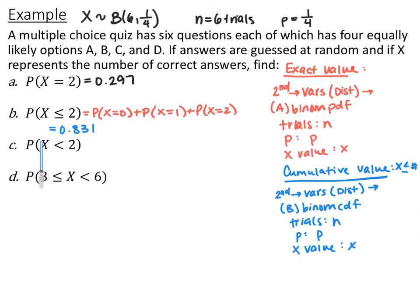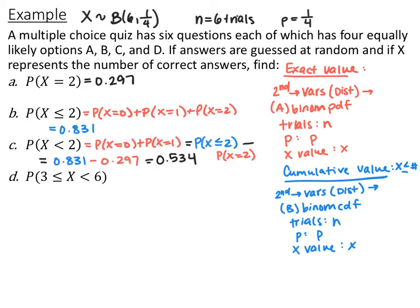If you have P(X < 2), you can't use the cumulative value directly because you don't want to include 2. You can either compute P(X=0) and P(X=1) individually and add them, or subtract: since we found P(X=2) = 0.297 and P(X ≤ 2) = 0.831, subtract 0.831 minus 0.297. So the probability that X is less than 2 — meaning zero or one correct — is 0.534.